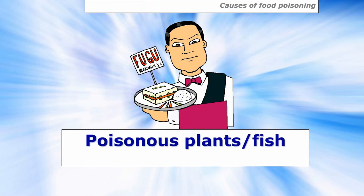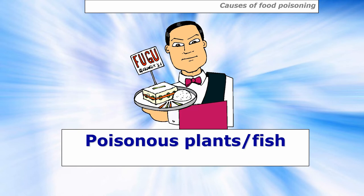Another cause is poisonous plants or fish. Fugu, the puffer fish, is a delicacy in Japanese restaurants, but if you're not licensed to prepare it you can poison your customer, because it contains a very potent neurotoxin which can kill within two minutes. The skin and internal intestines contain the neurotoxin, so you must be licensed to prepare it.